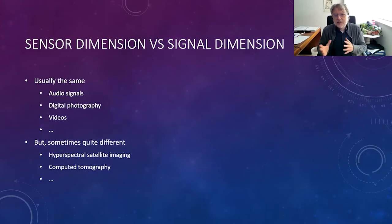The sensor dimension and the signal dimensions are two different things. They may be the same and usually they are the same. For example, for audio signals, we have one sensor in the form of periodic sampling in time and it produces a one-dimensional audio signal. Or in digital photography, we have a two-dimensional sensor array which produces a two-dimensional signal in the form of an image. Or in videos, these two-dimensional signals are acquired at certain time intervals producing a volumetric, a three-dimensional entity.